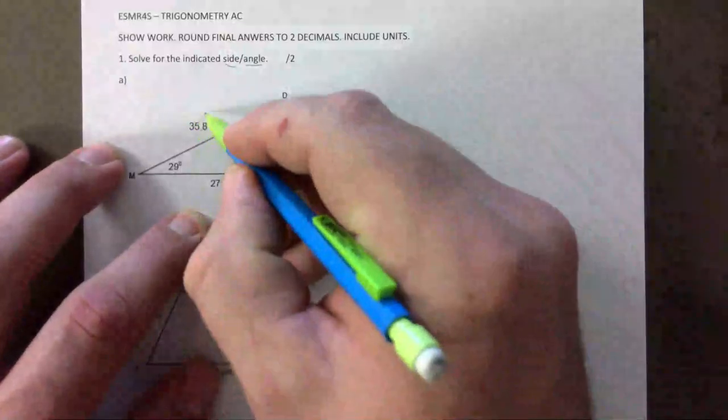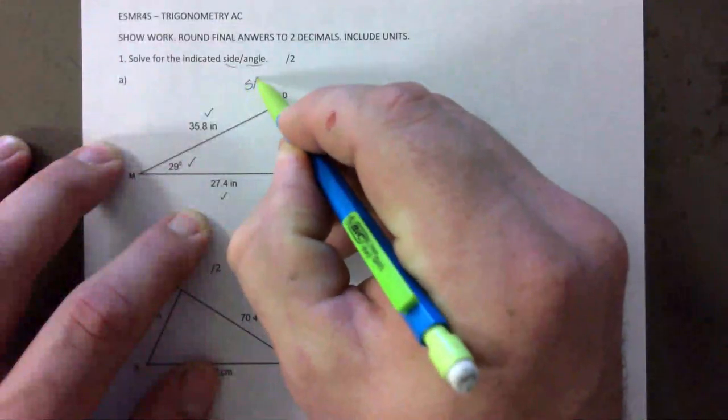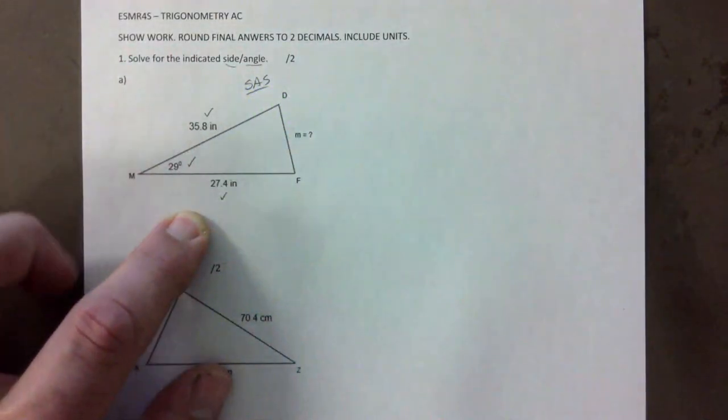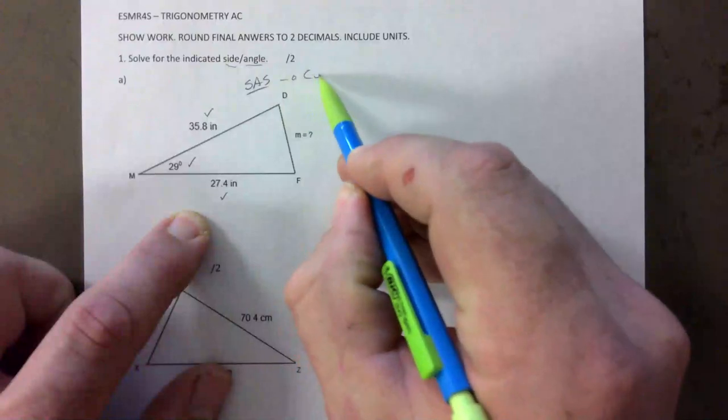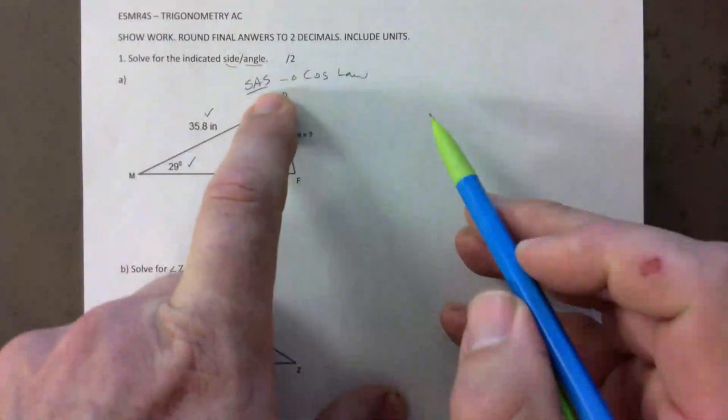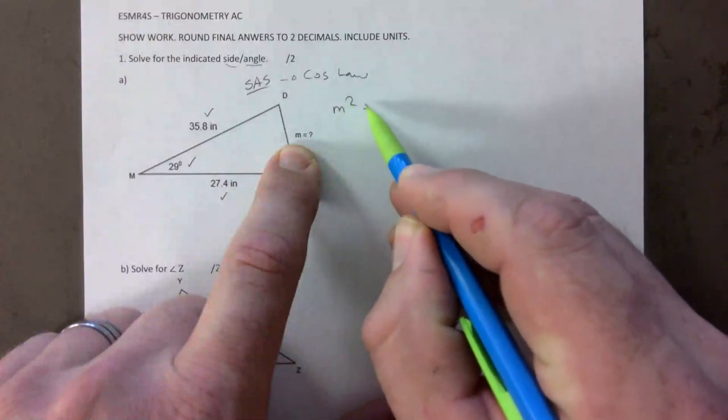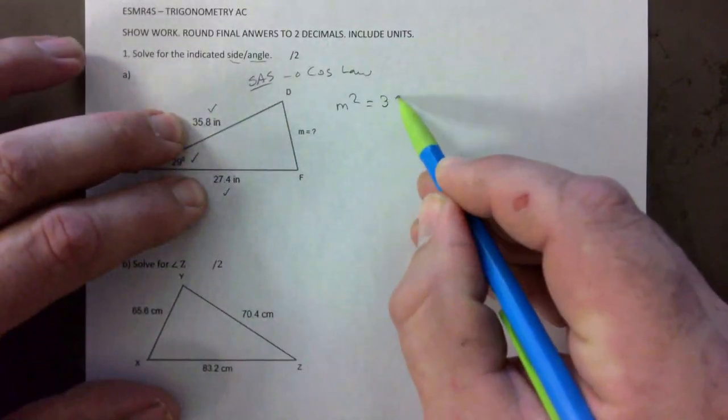This particular one I can tell right away this is side-angle-side, there's no pair to be had. So SAS, that means I have to use cosine law and you should have a formula under SAS that guides you. To find this side here m squared, I'm going to have to take these two sides.